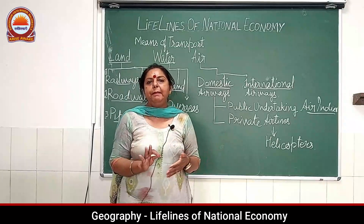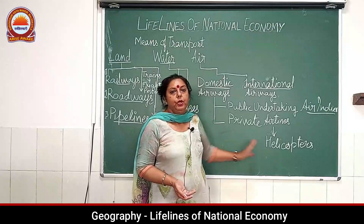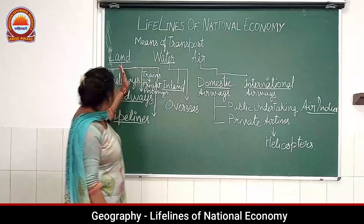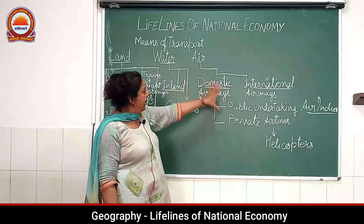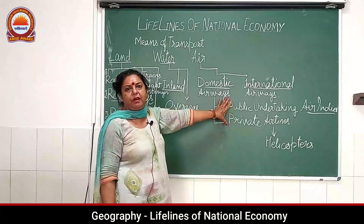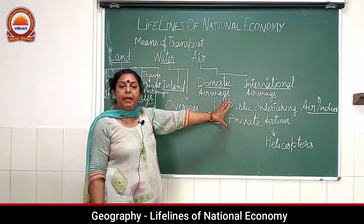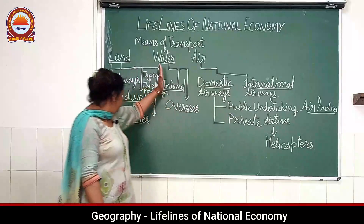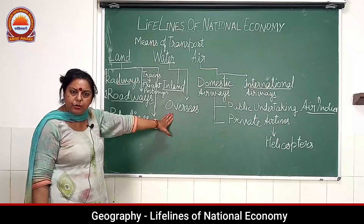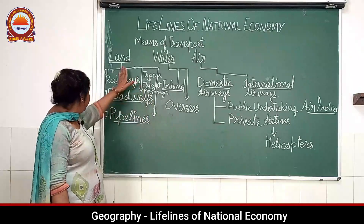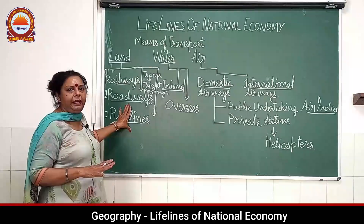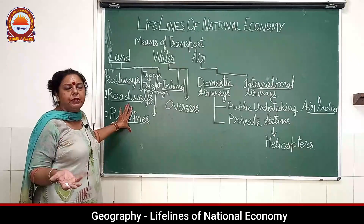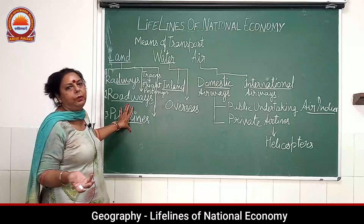In conclusion, we have these modes of transportation — land, water, and air. Airways are the fastest means of transportation used by millions of people across the world. Inland and overseas waterways are also used by millions across the world. Railways and roadways carry heavy and bulky material from one place to another, providing the best facilities to people across the world. Thank you, have a nice day.